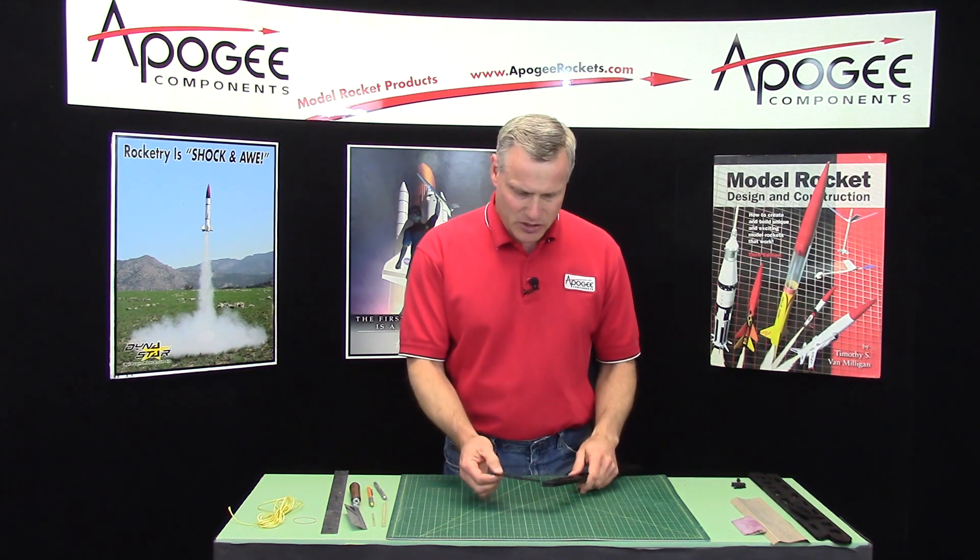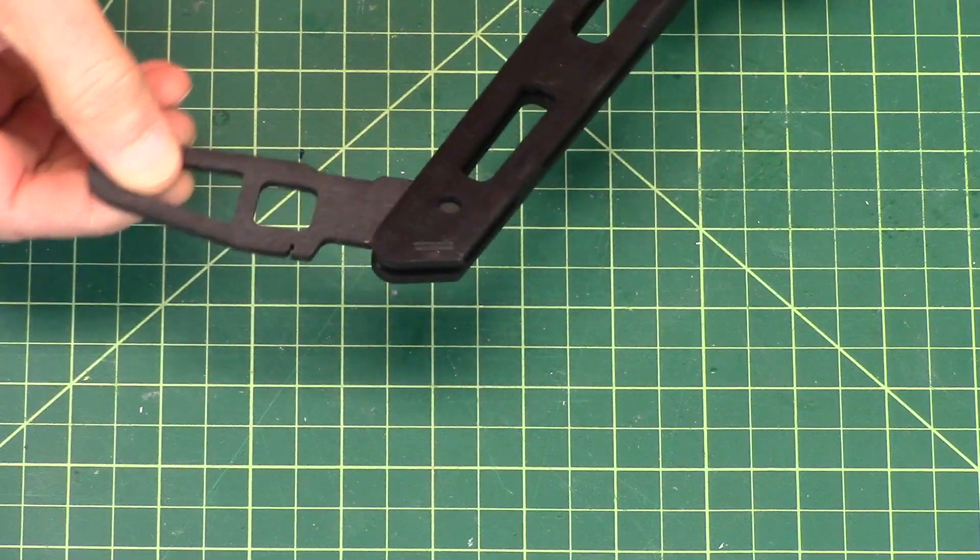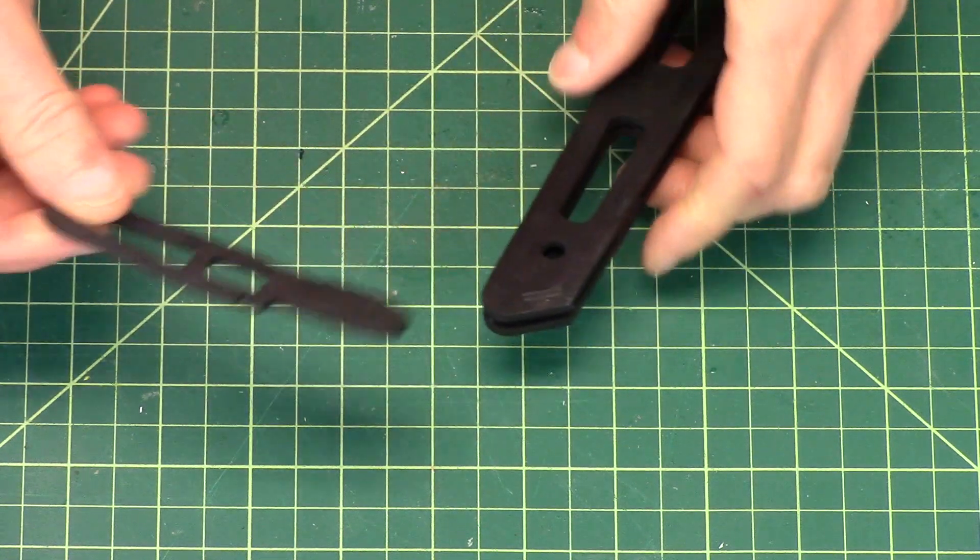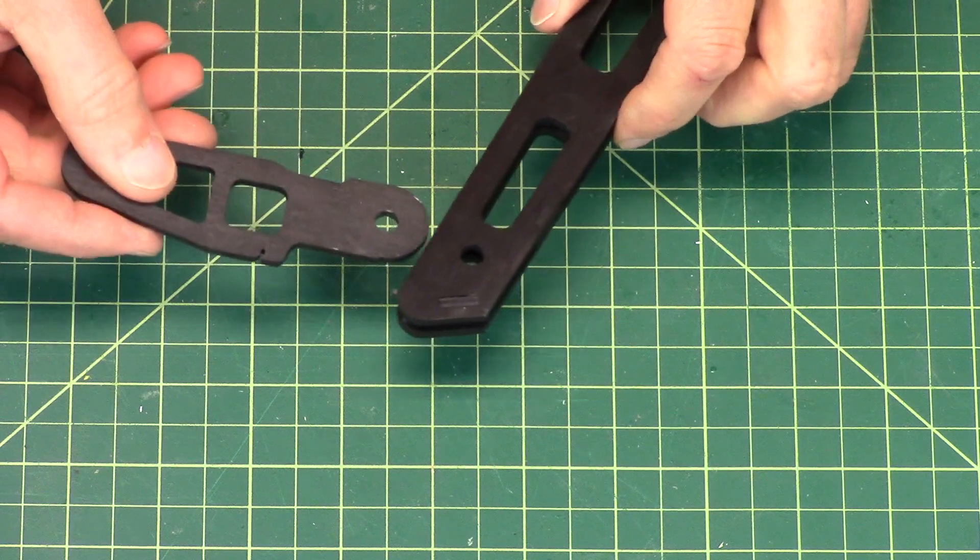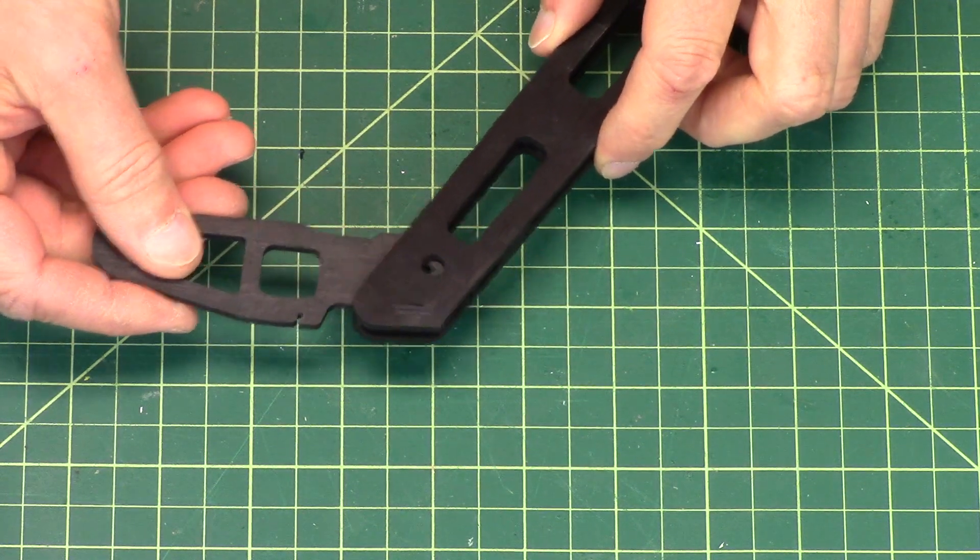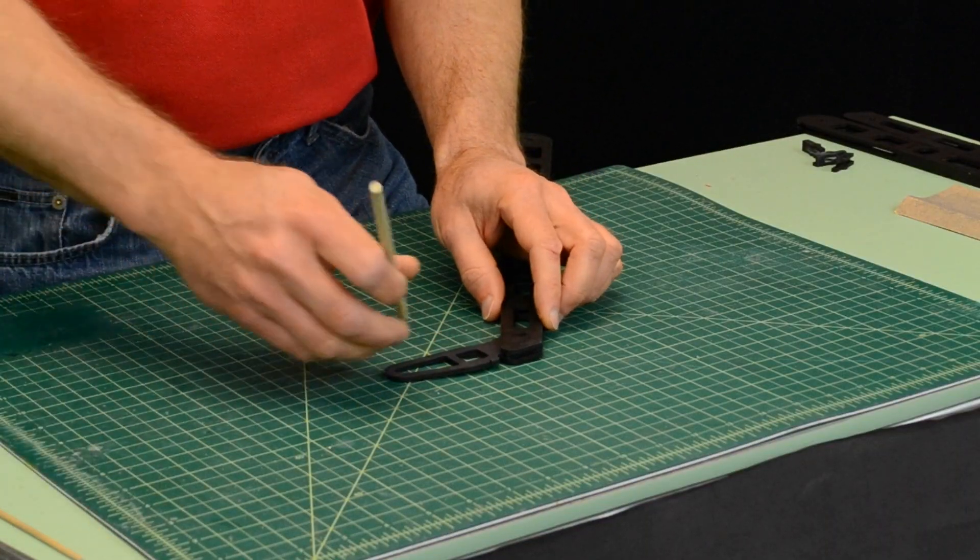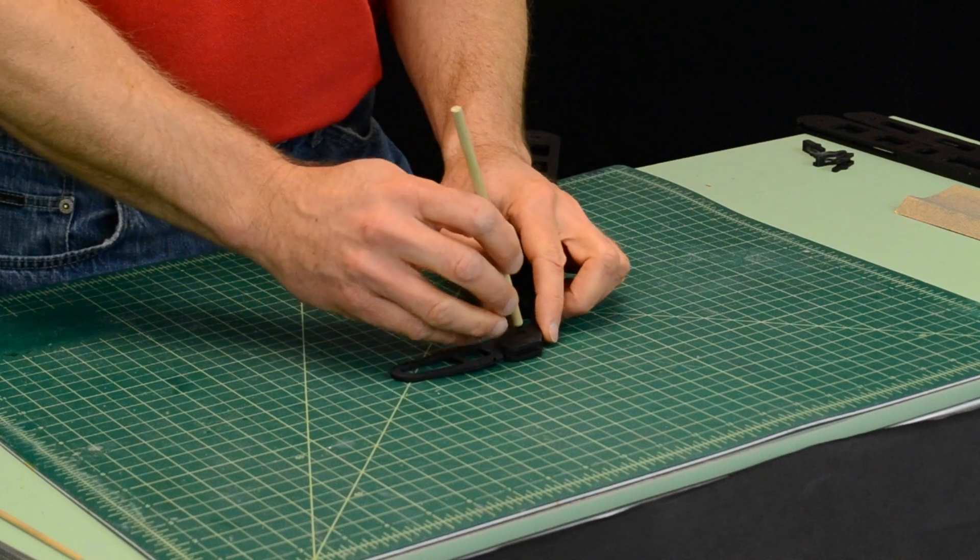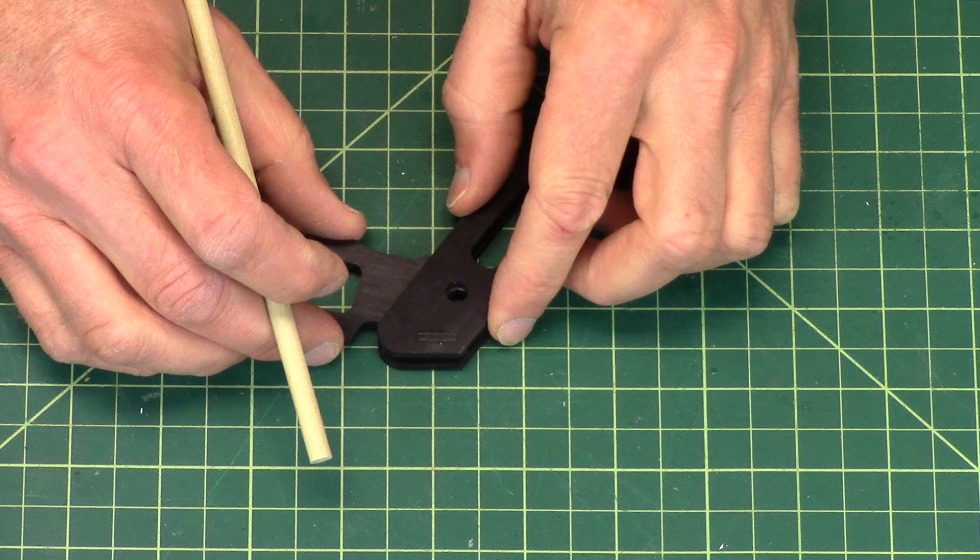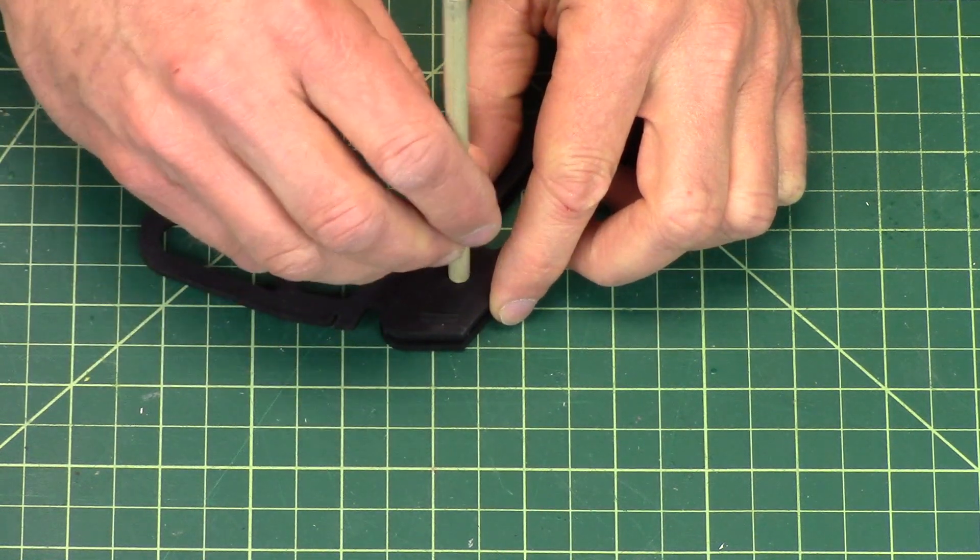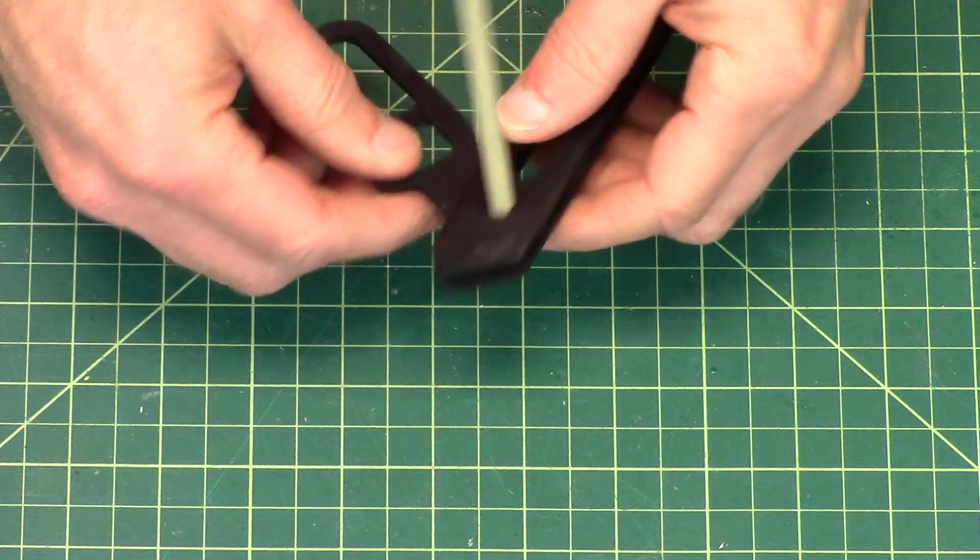At this point I want to go ahead and start assembling the tips on the legs. You have this part here, which is A8, and it's going to go on the tip like this. And a wood dowel is going to go into that hole, get it to line up, just like that.